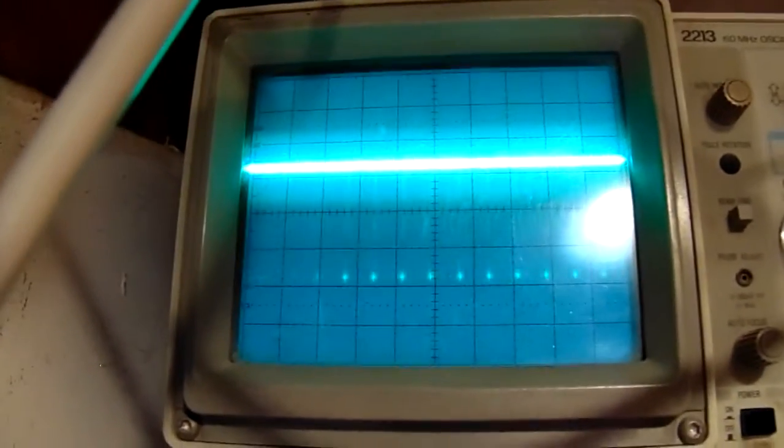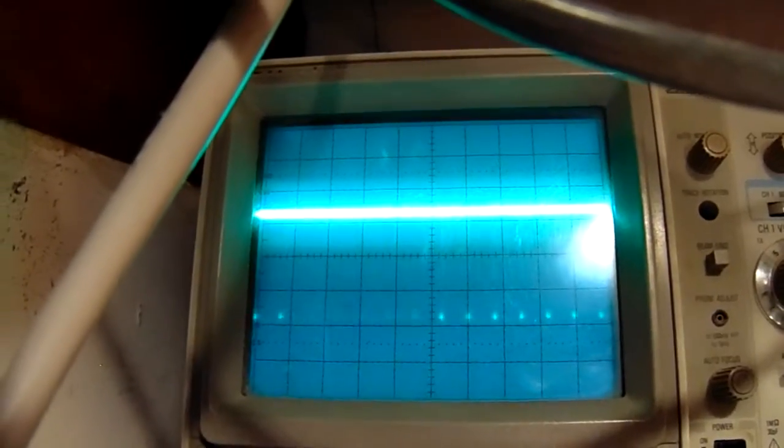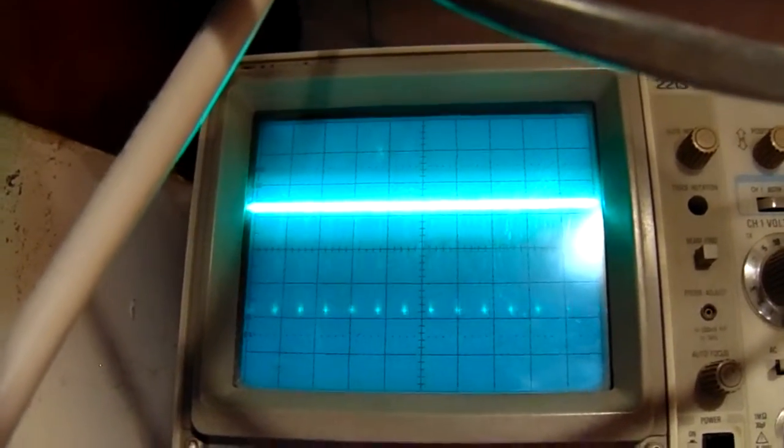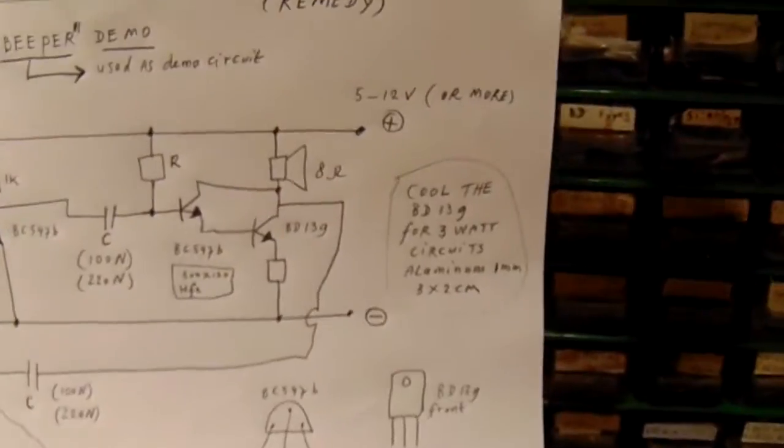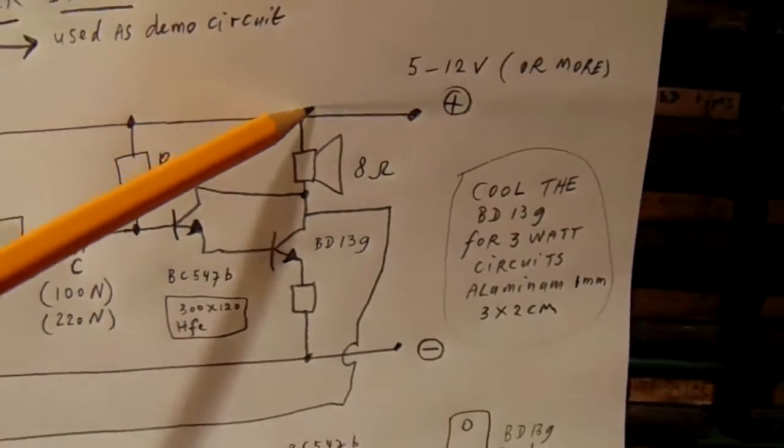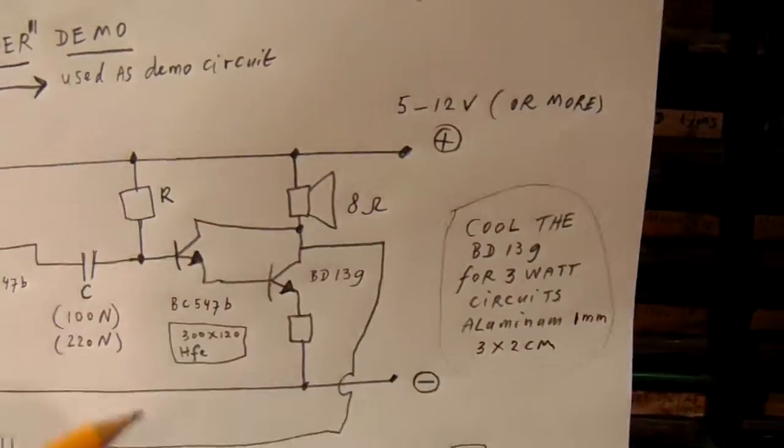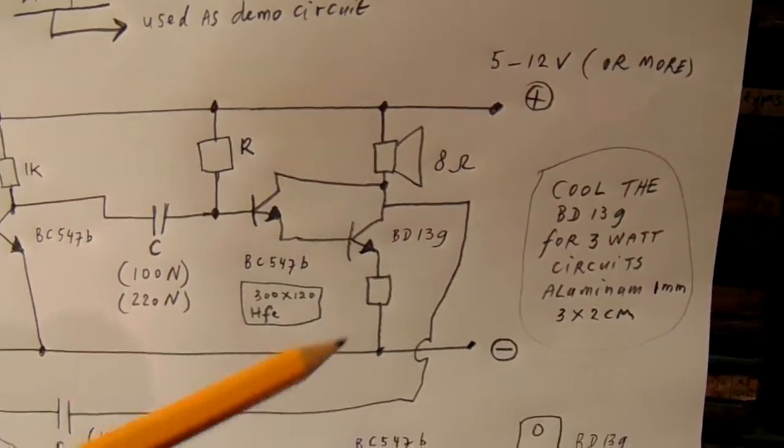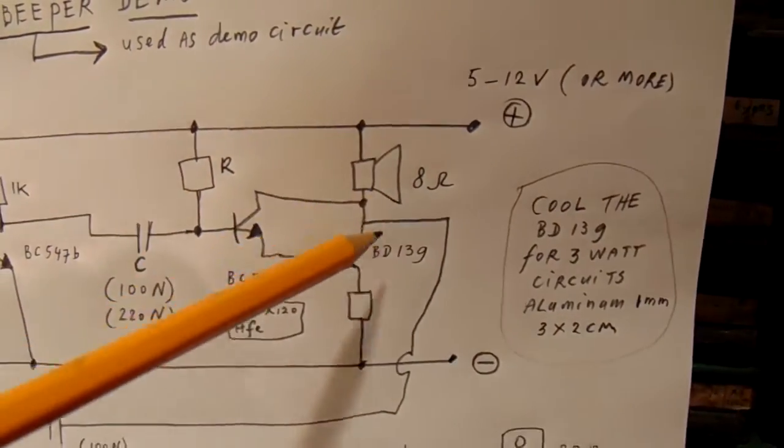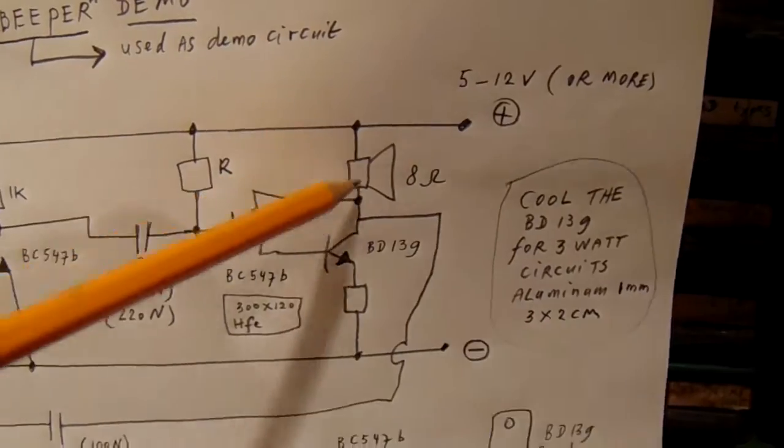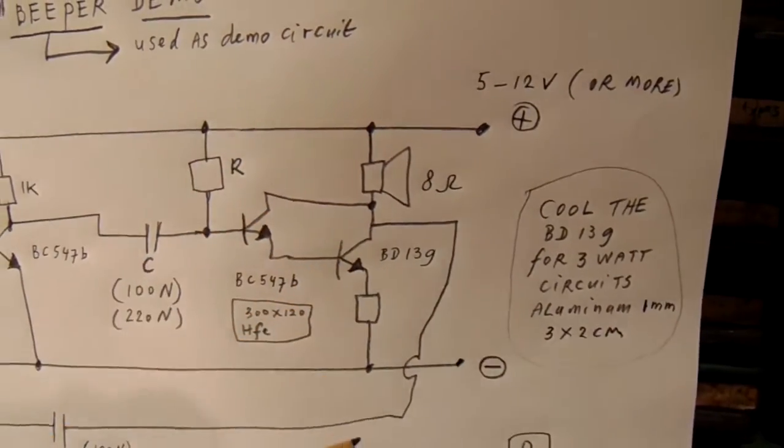And here on the scope you see the waveform and also the DC that's constantly present on the output here. Because here we have a kind of DC flowing interrupted by the frequency. And the reason is that the speaker is coupled into the collector emitter lead.